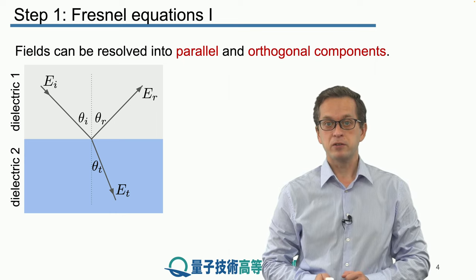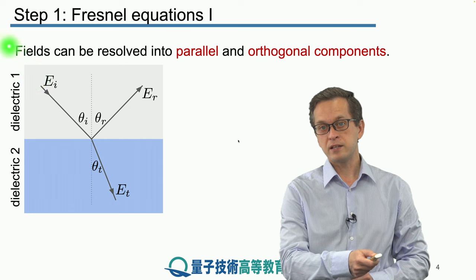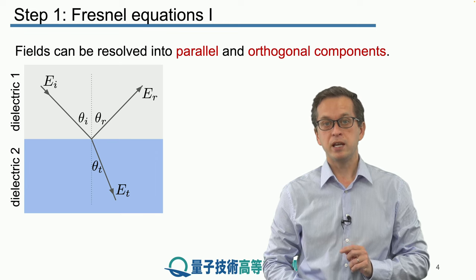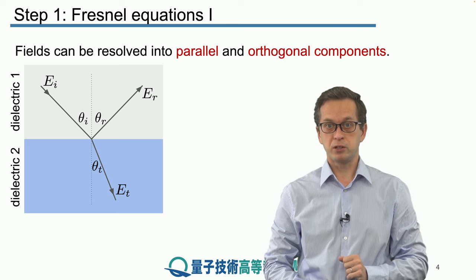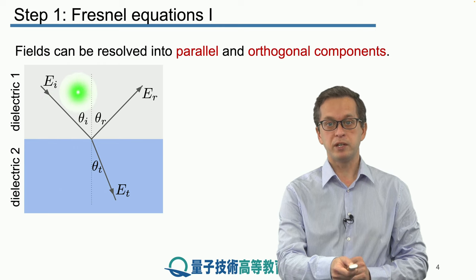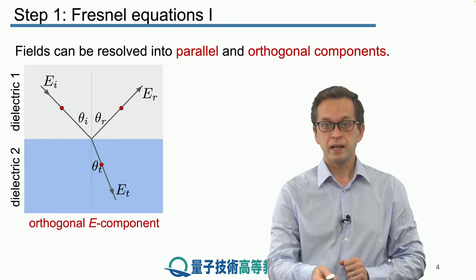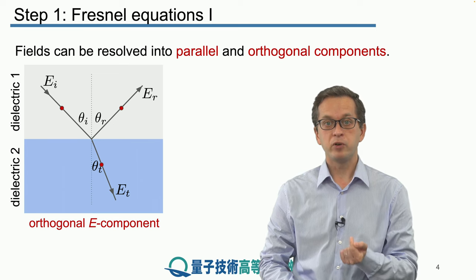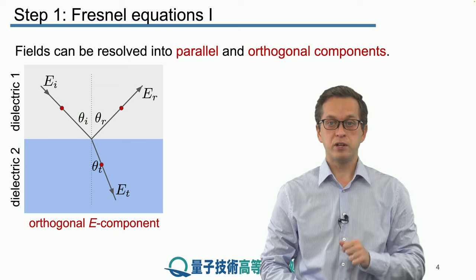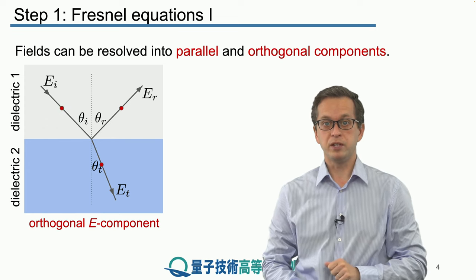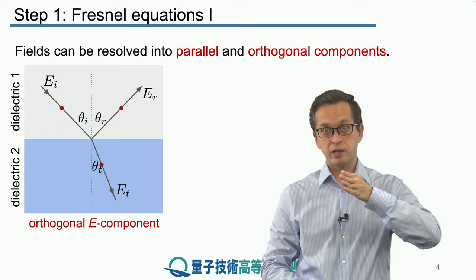So let's begin by considering our scenario. We know that since the k vector is pointing in this direction, the polarization of our E field can only be in the direction that's perpendicular to the direction of propagation. When we consider the E field along this line, it can only be in this direction or in the plane perpendicular to the line. It can be resolved into an orthogonal component — this red dot means the orthogonal component of the E field is coming out of or into the screen. That doesn't mean the E field is polarized in that way; that's only one component. The E field can be in any plane perpendicular to the direction of travel.